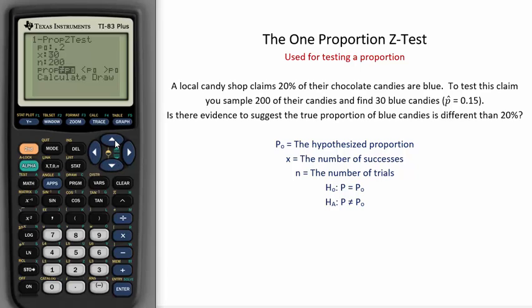We can also find X by using P-hat. P-hat is 15%. 15% of 200 is 30. The equation for P-hat would be X over n. Sometimes a problem might require a little bit of algebra to find the number of successes, which is what we must enter in here.